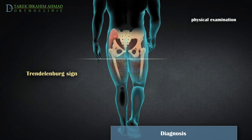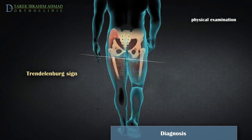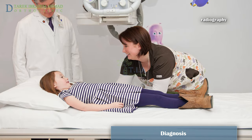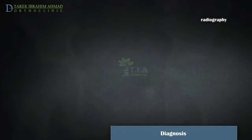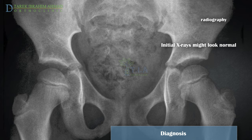One specific test your doctor will look for is the Trendelenburg sign. When standing on the affected leg, an abnormal tilting of the pelvis indicates weakness in the abductor muscles of the hip. If Perthes' disease is suspected, the provider will obtain x-rays of the child's hips. Initial x-rays might look normal because it can take one to two months after symptoms begin for changes to become evident. The doctor will likely recommend several x-rays over time to track disease progression.